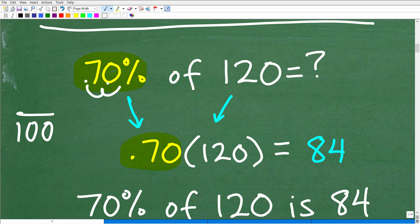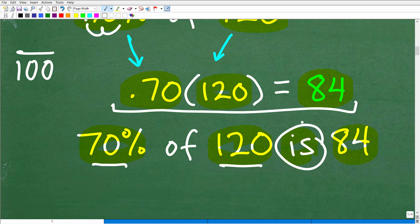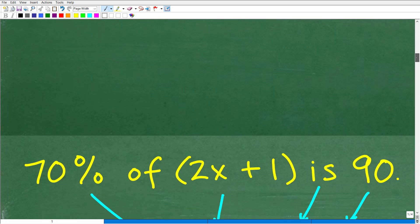But anyways, when we want to convert a percent to a decimal, we need to move that decimal point over two places to the left, which again is the same thing as divided by 100. So 70% is the same thing as 0.70. And then all we need to do is simply multiply that decimal by the number that we're trying to find the percent of. So 0.70 times 120 is 84. Let's go ahead and just kind of translate what we just did here. 70% of 120 is 84. So if you understand how we translate a verbal sentence into a mathematical sentence, then you're going to be able to do this problem or at least set this up.